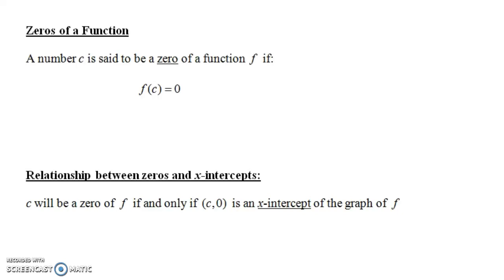In this video we're going to talk about the zeros of a function. A number c is said to be a zero of a function f if f of c is equal to zero. So c is said to be a zero of a function if when you input c into the function the output is zero. It's not what you get when you plug in zero into your function — it's a number that you can plug into your function where you get an output of zero.